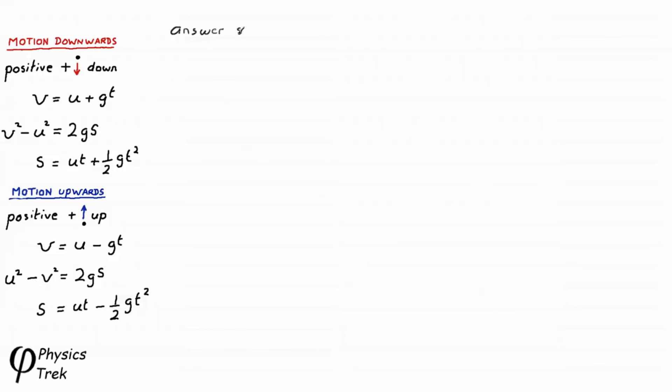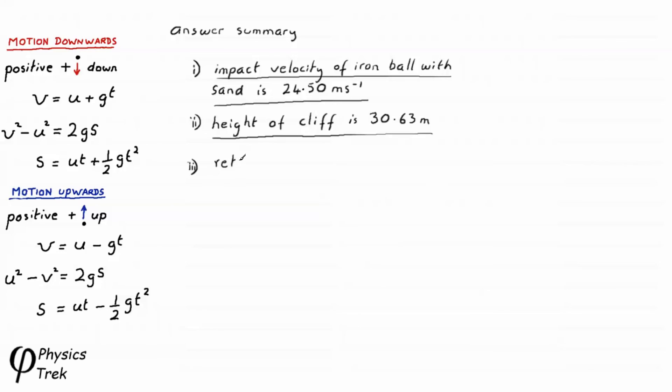Okay, now we come to our answer summary. Part 1. The impact velocity of the iron ball with the sand is 24.50 meters per second. Part 2. The height of the cliff is 30.63 meters. And part 3. The retardation of the iron ball is 2,410.80 meters per second per second. All this to two decimal places.